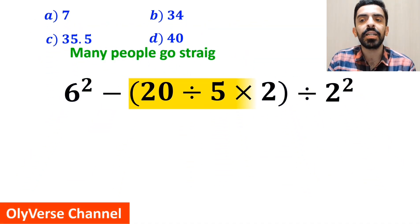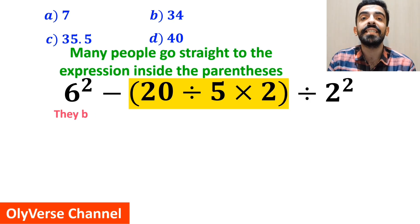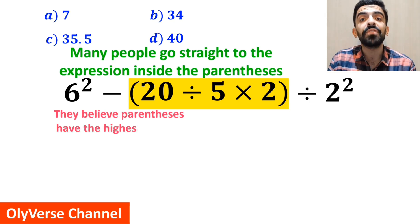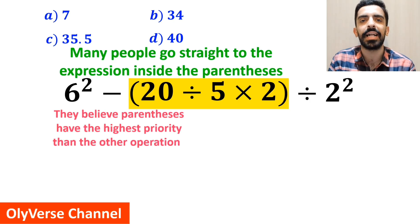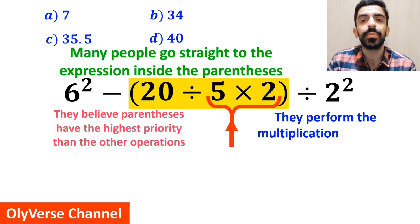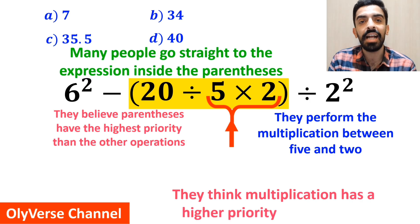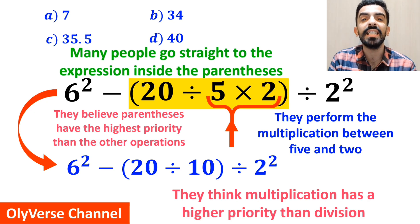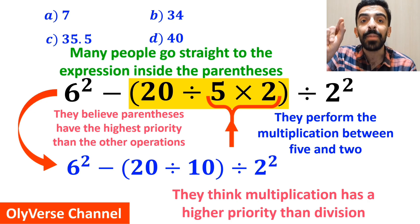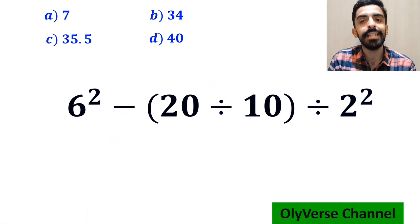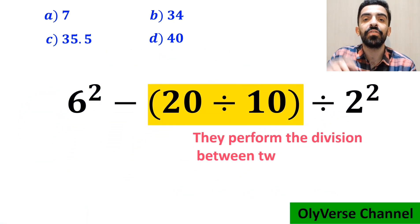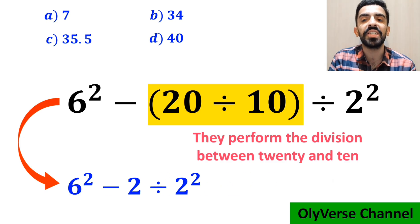At the beginning, many people go straight to the expression inside the parenthesis because they believe parenthesis have the highest priority over the other operations. And they immediately perform the multiplication between 5 and 2 because they think multiplication has a higher priority than division. So they simplify this expression and write it as 6 squared minus 20 divided by 10 instead of parenthesis, then divided by 2 squared. In the next step, they move to the division between 20 and 10 and replace this expression with 6 squared minus 2 divided by 2 squared.